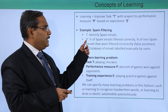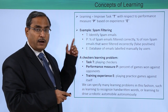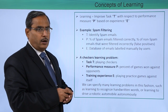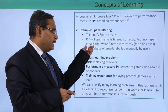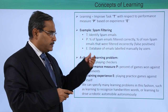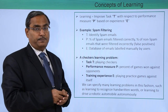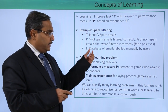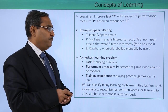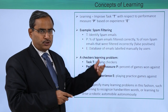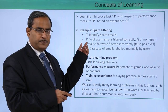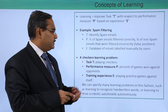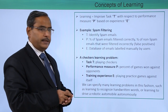Next is P, which denotes the performance measure. P will be the percentage of spam emails filtered correctly and the percentage of non-spam emails that were filtered incorrectly — that is a false positive. That percentage will decide the performance measure for this case study.